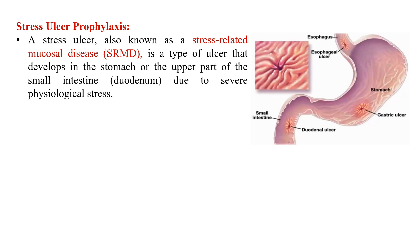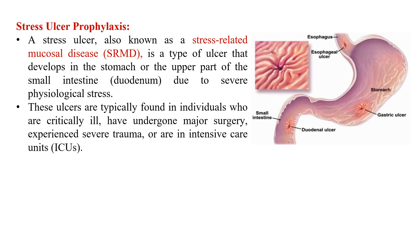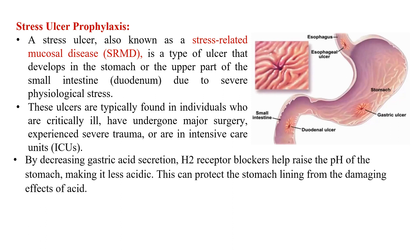Stress ulcer, also known as stress-related mucosal disease, is a type of ulcer that develops in the stomach or upper part of the small intestine due to severe physiological stress. These ulcers are typically found in critically ill individuals, those who have undergone major surgery, experienced severe trauma, or are in intensive care. When someone is in ICU or after major surgery, the body gets stressed and makes too much acid. By decreasing gastric acid secretion, H2 blockers help raise the pH of the stomach, making it less acidic and protecting the stomach lining from damage.